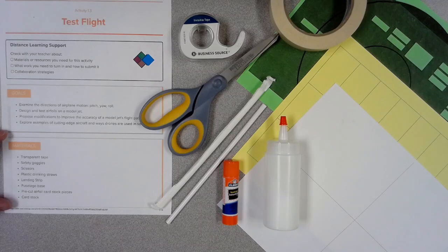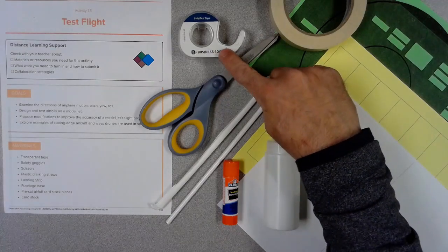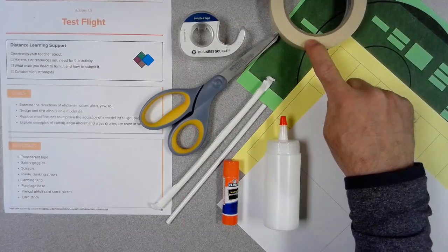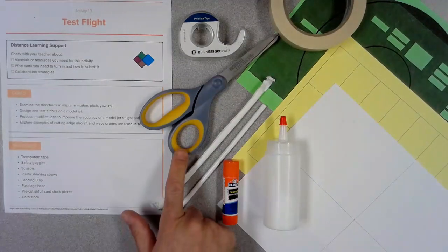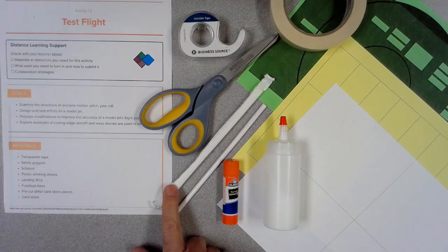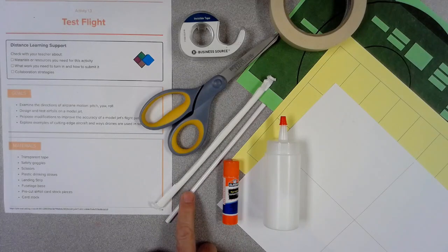According to the materials list we're going to need some transparent tape. If you don't have transparent tape, masking tape will also work. You'll also need your safety glasses, scissors, and some plastic straws. Doesn't matter if it has paper on it or if it's just the plastic straw by itself.